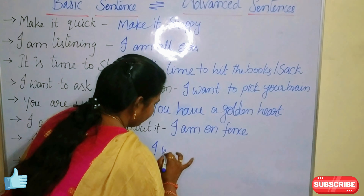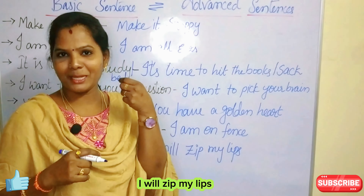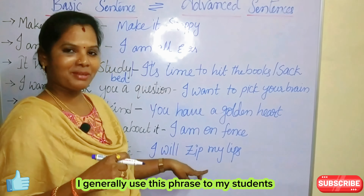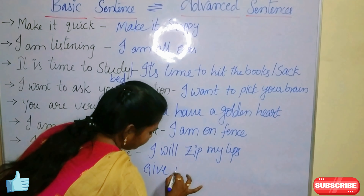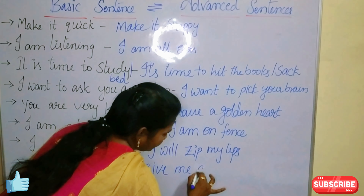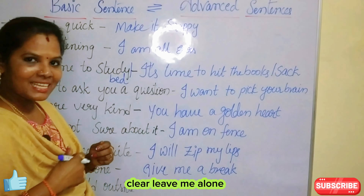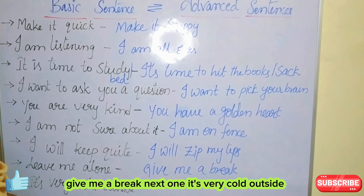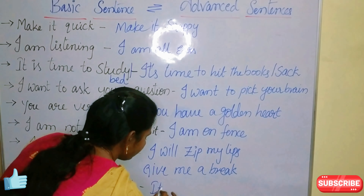Then, 'I will keep quiet' — the advanced version is 'I will zip my lips.' I generally use this phrase with my students multiple times. Let us move on. 'Leave me alone' — the advanced version for that is 'Give me a break.' Leave me alone equals give me a break.